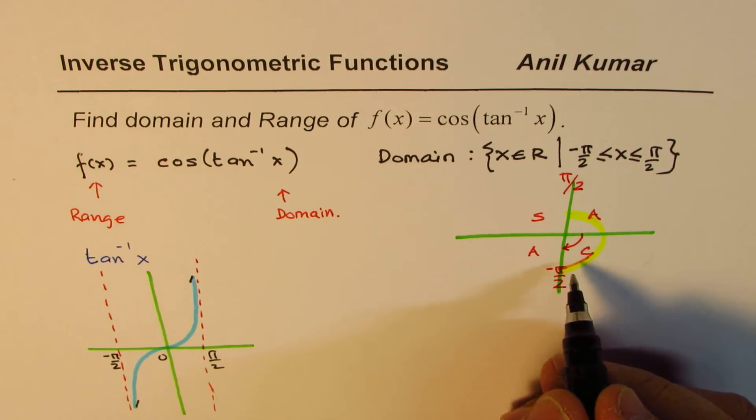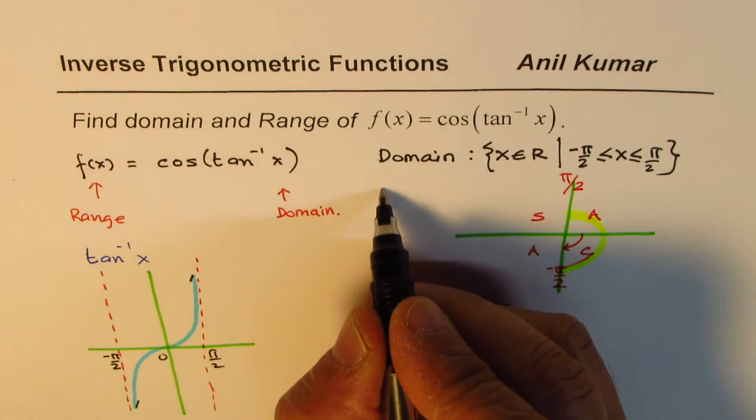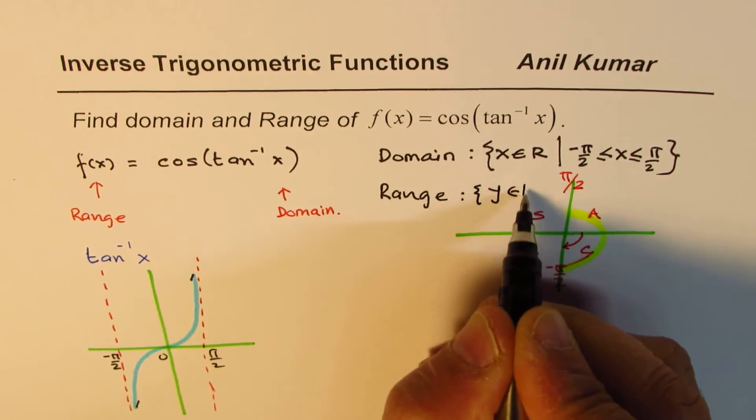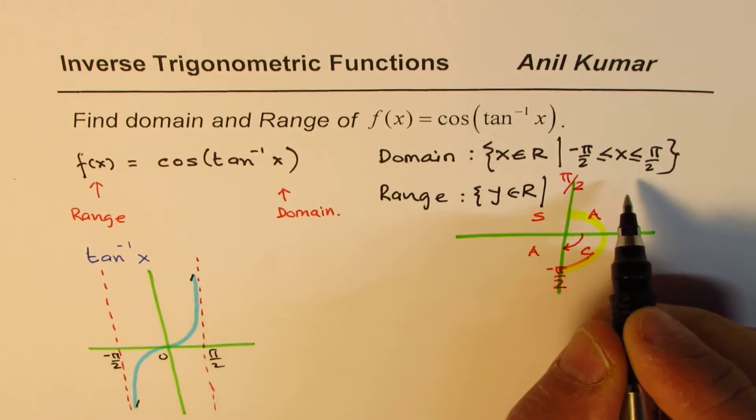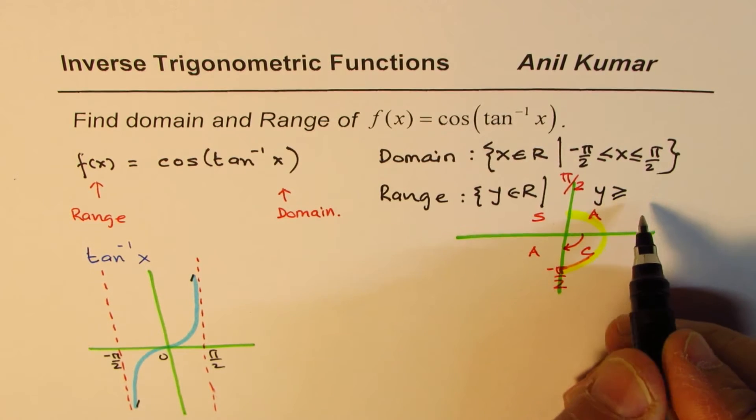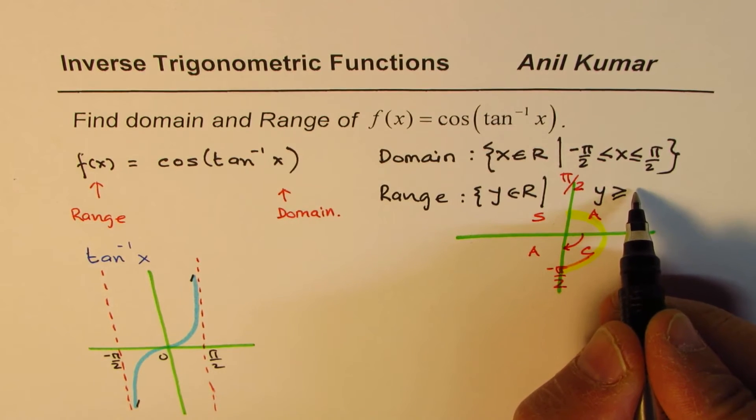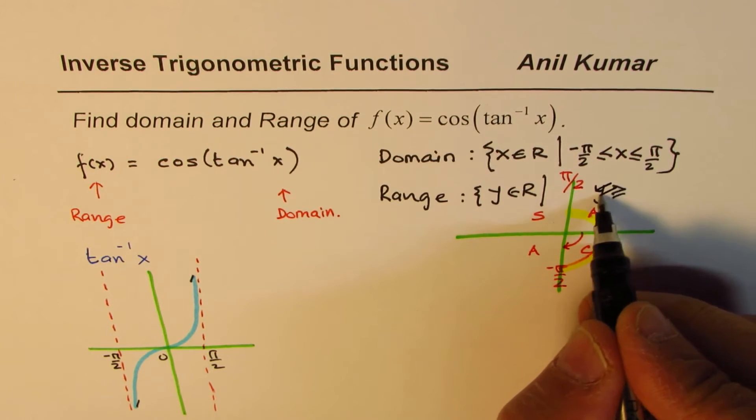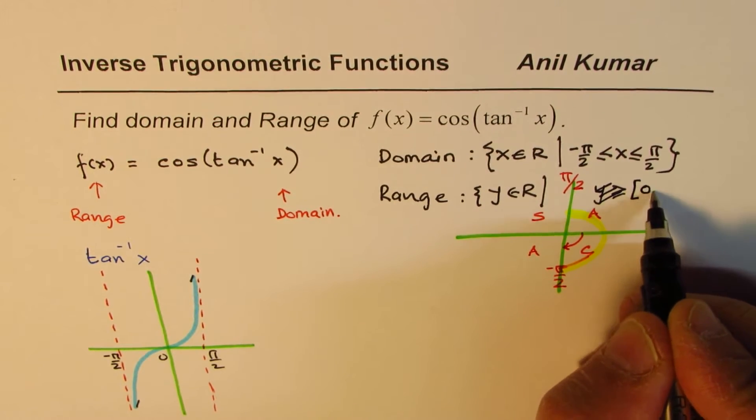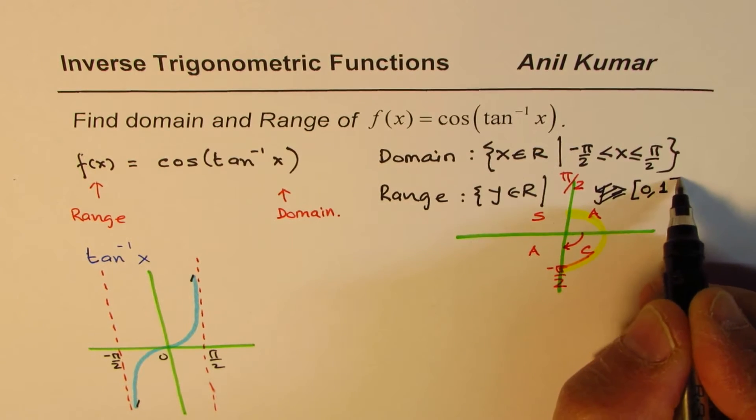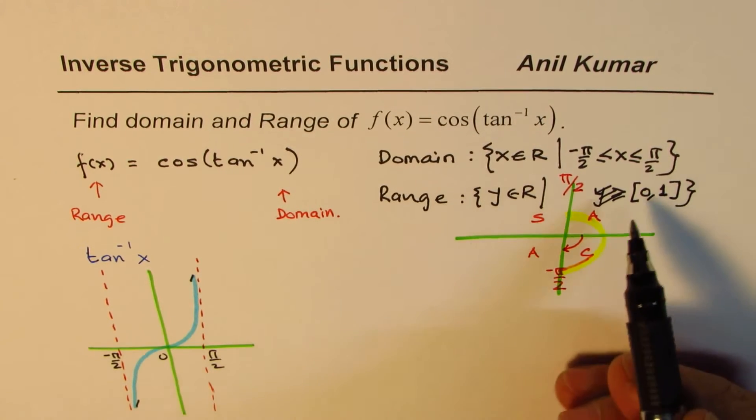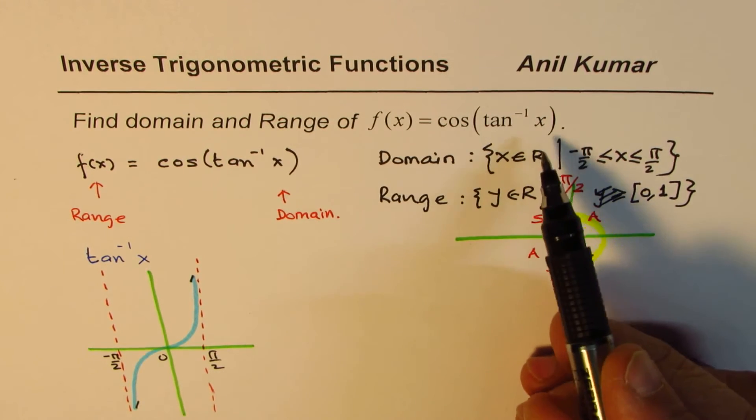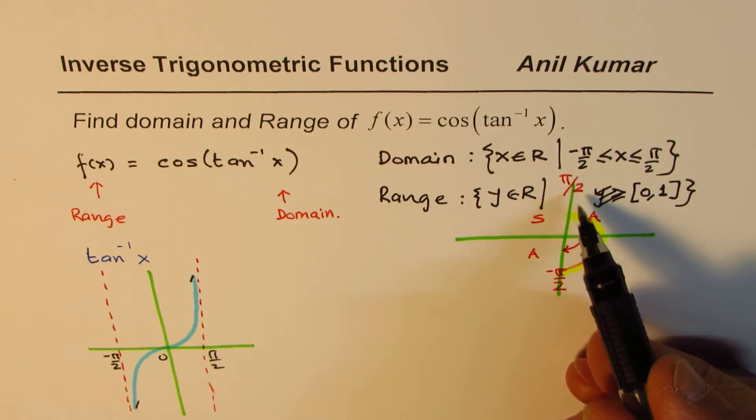From here we can say that the range of the function is y belongs to real numbers where y is greater than or equal to 0. Let me rewrite like this. It is from 0 to +1. So y is between 0 to 1 since the domain is between -π/2 to π/2.